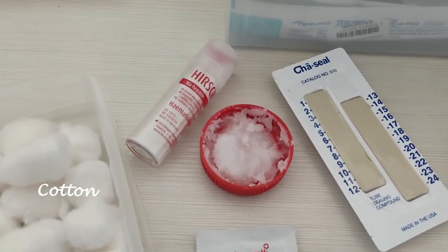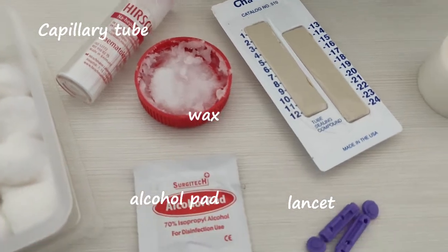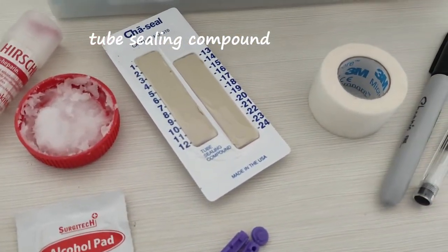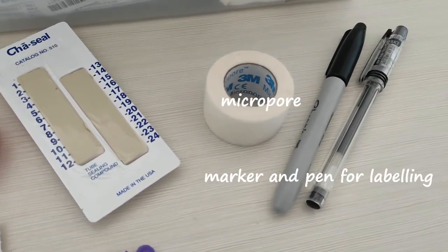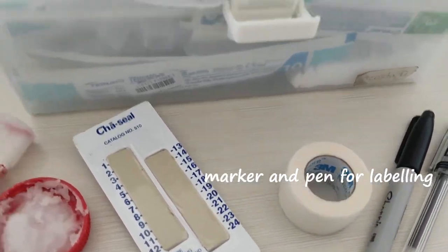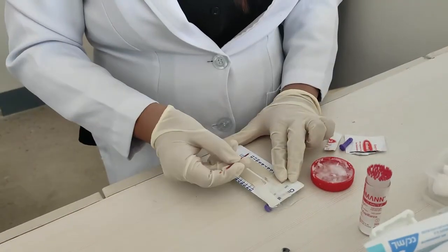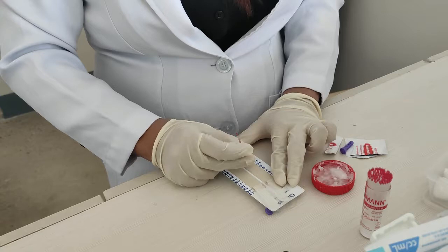First, we have to prepare the materials flashed on your screen. Collect an ample blood using a capillary puncture, filling up two-thirds of your capillary tube. Seal the tube using the tube sealing compound and wax.